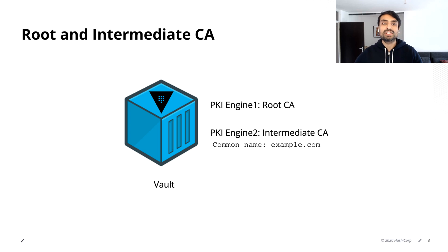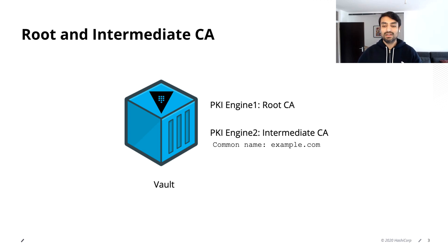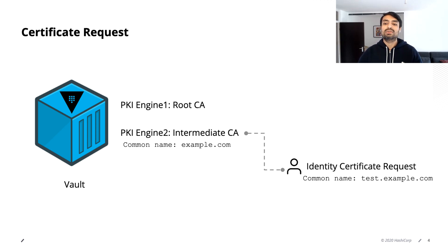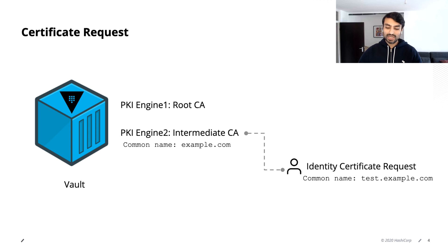Once I have the intermediate CA, I'm going to send a certificate signing request to the root CA. And once this request is signed, I'm going to set up the intermediate CA with the new certificate received from the root CA. Once I have this environment set up, I'm going to create a new policy and a new role in Vault so that I can generate new certificates using the intermediate CA PKI secret engine — for the common name test.example.com, which I'm going to use for my Nginx server.